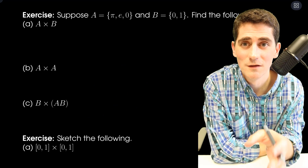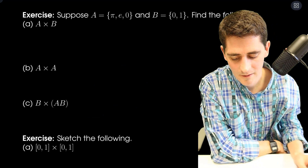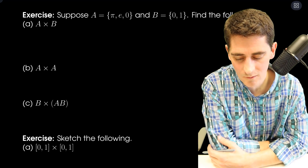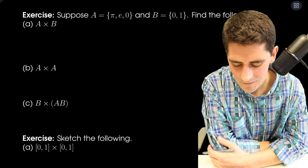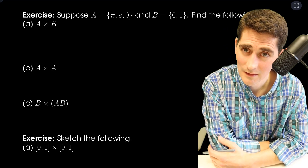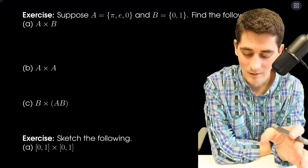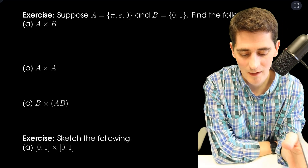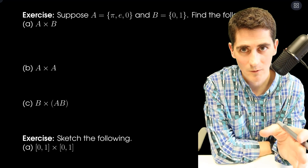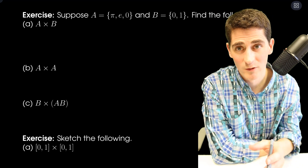The other thing I want to show you is the Cartesian product of sets. I have A = {π, E, 0} and B = {0, 1}. And I have A × B — now, one thing this is not is multiplication. I have students try to do stuff like π times 0 and π times 1. That's not right — that's not how this works.